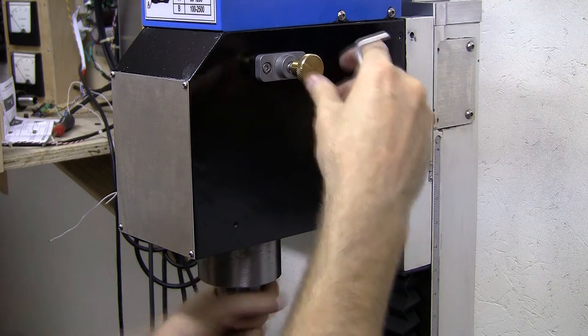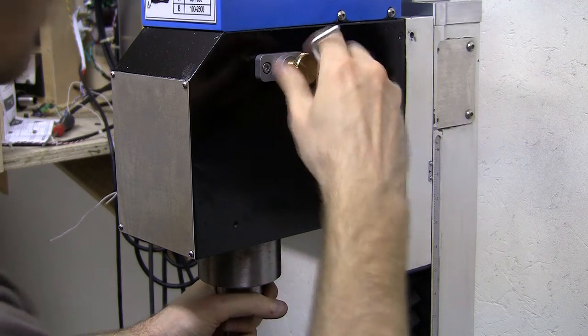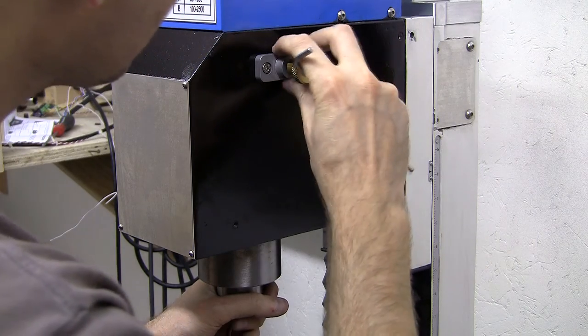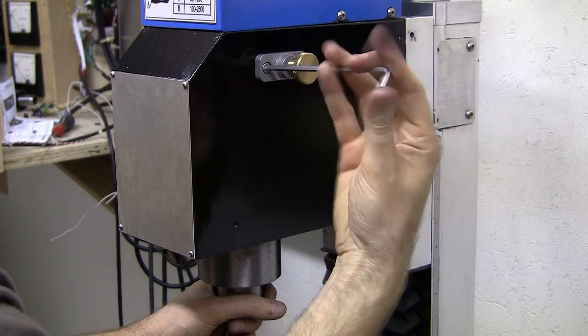To make this easier, fully extend the locking pin before installing the spindle lock onto the head. Align the locking pin with one of the collar detents, and then adjust for best feel.